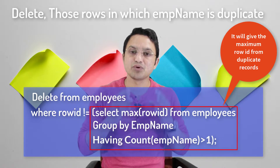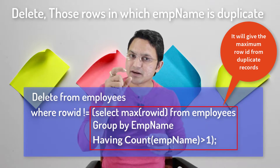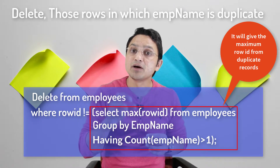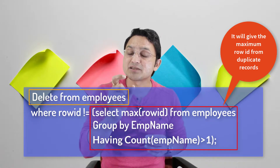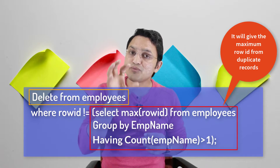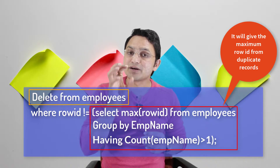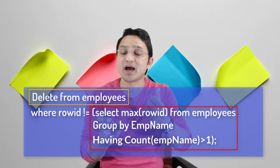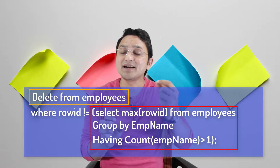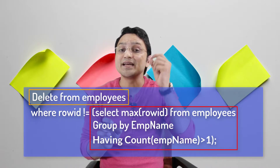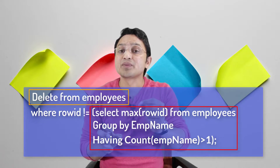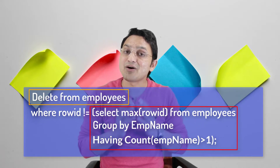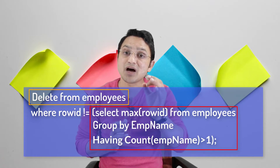How exactly this query works: first it will find the duplicate records, and from those duplicate records it will identify the row which has the maximum ROWID. Once identified, it feeds this information to the DELETE SQL query, and the DELETE query will delete all the data except the row which has the maximum ROWID.